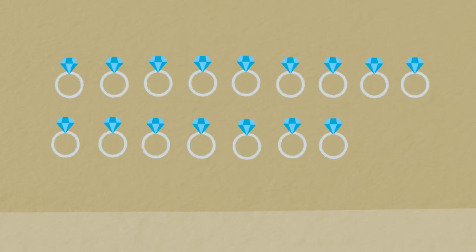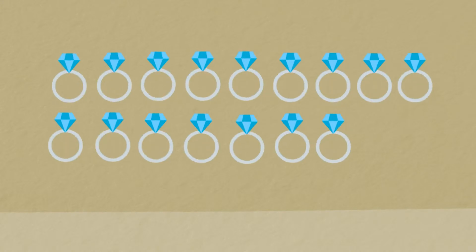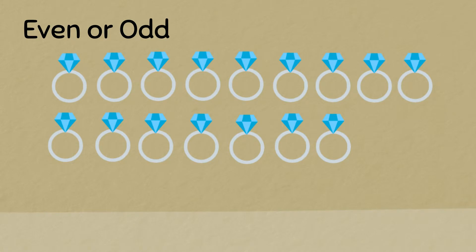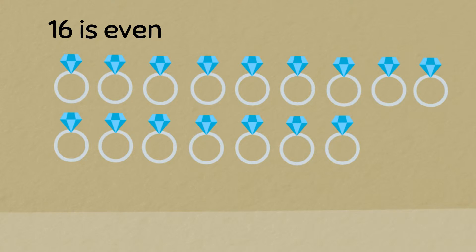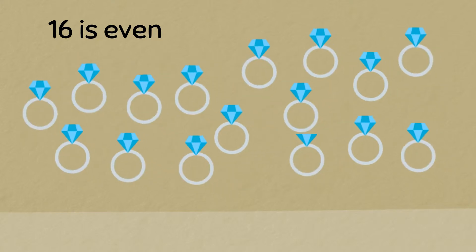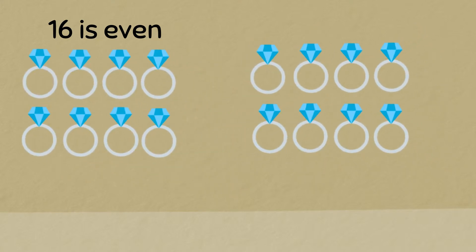Check out these eight diamonds. Is this number even or odd? You got it! This number is even because we can pair them all up with no problem — eight diamonds in each group.